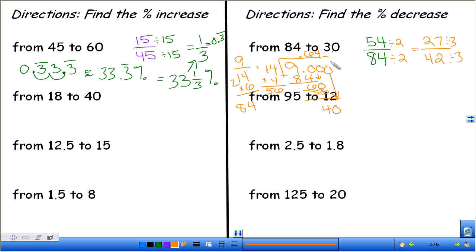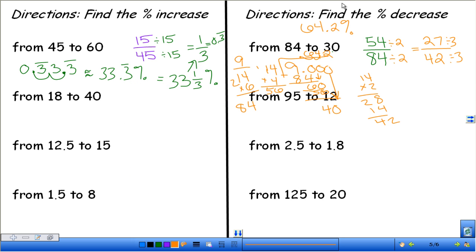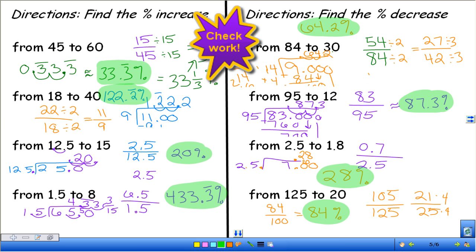How many times does 14 go into 40? Let's see. How many times does 15 go into 40? Twice. Because 3 times is 45. So let's try 2. 14 times 2 is 28. Can we add another one on here? Can we all? No. So it's just 2? So what's our percent? 64.2%.